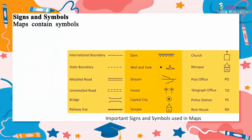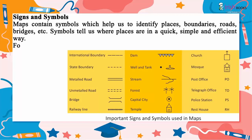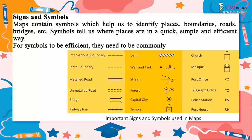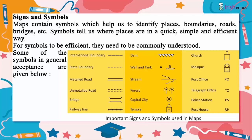Signs and symbols. Maps contain symbols which help us to identify places, boundaries, roads, bridges, etc. Symbols show where places are in a quick, simple and efficient way. For symbols to be efficient, they need to be commonly understood. Some symbols in general acceptance include: international boundary, state boundary, metalled road, unmetalled road, bridge, railway line, dam, well and tank, stream, forest, capital city, temple, church, mosque, post office (P.O.), telegraph office (T.O.), police station (P.S.), and rest house (R.H.).